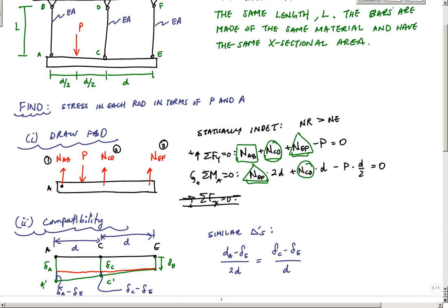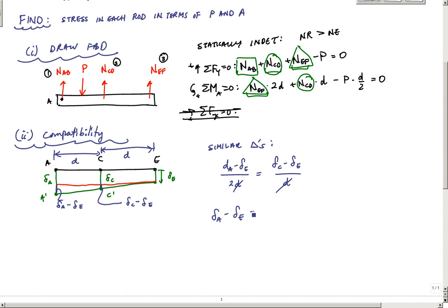From similar triangles, I have delta A minus delta E over 2D is equal to delta C minus delta E over D. From this relationship, the D's cancel out. If I multiply this across, I have delta A minus delta E is equal to 2 times delta C minus 2 times delta E. I'm going to add delta E over, so delta A is equal to 2 delta C minus delta E.